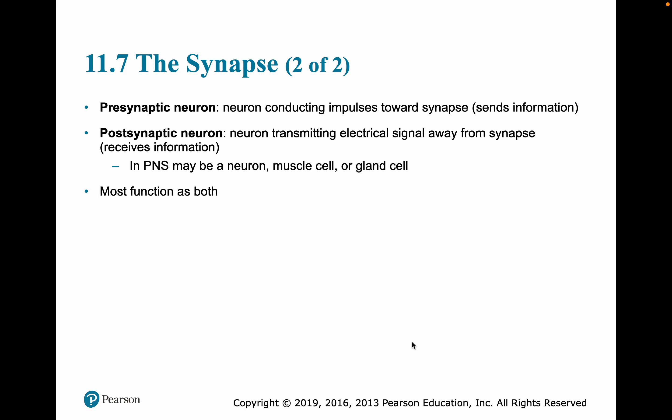The postsynaptic neuron is the neuron that is taking a signal away from the synapse, so it is receiving information at the synapse. That postsynaptic neuron in the periphery could be a neuron, a muscle cell, or a gland cell. But something to keep in mind is that most neurons are going to be both presynaptic and postsynaptic neurons — in some synapses they'll be the pre, and in others they'll be the post.